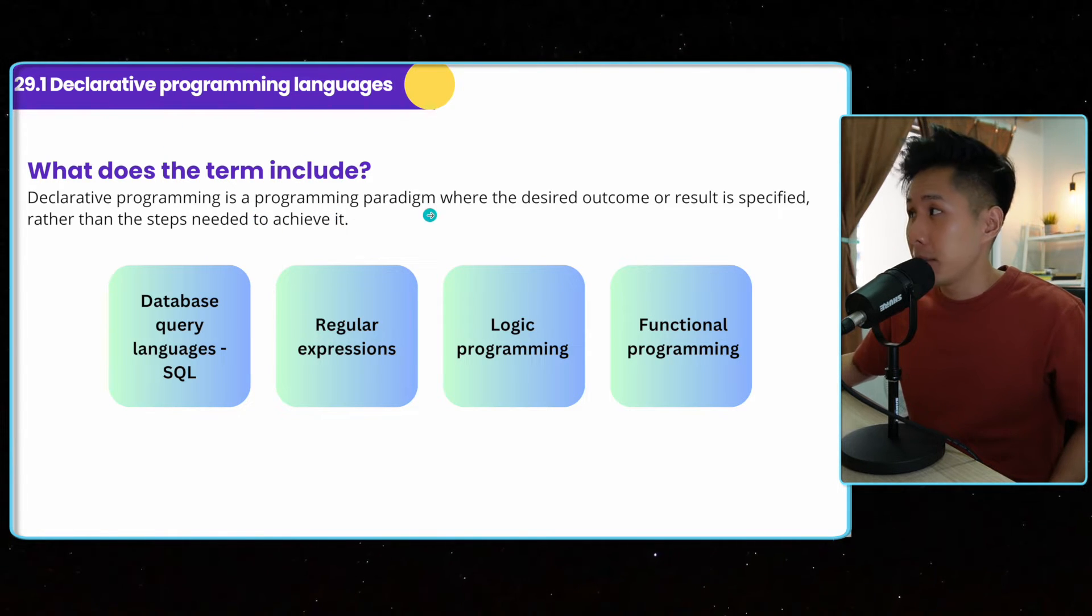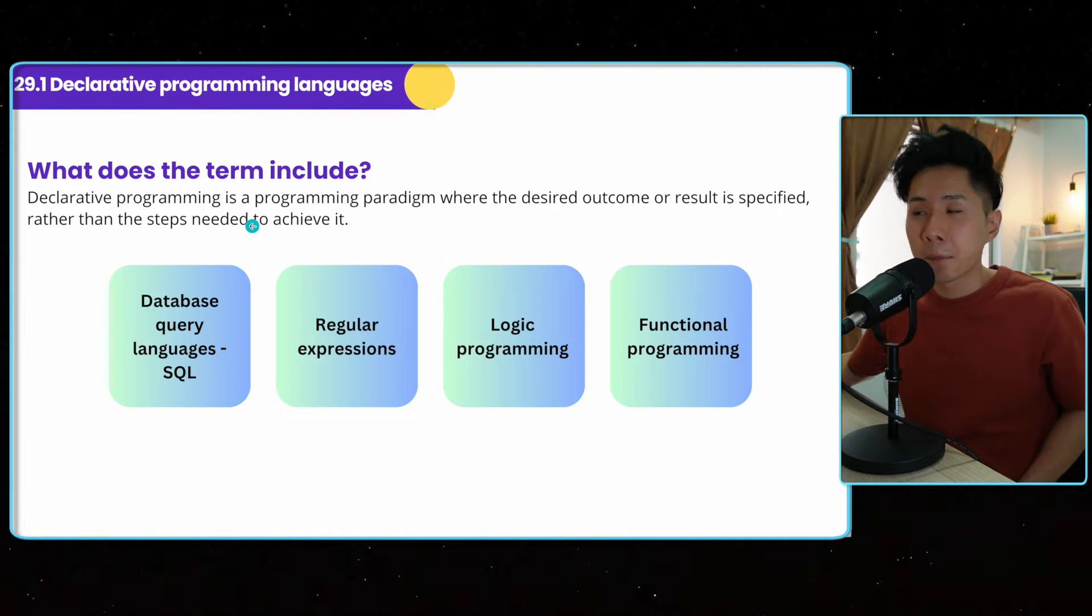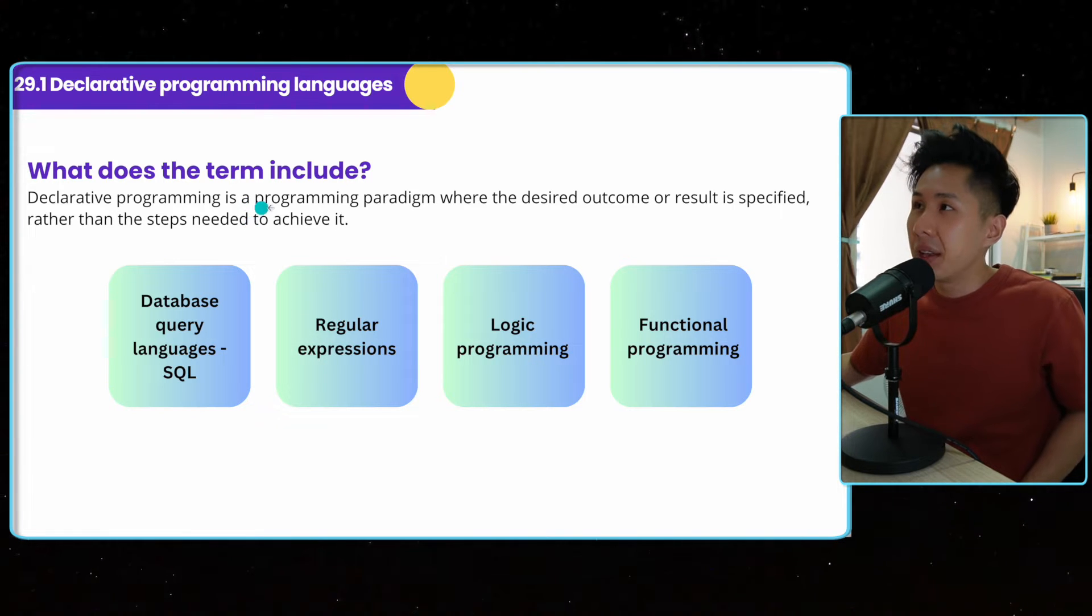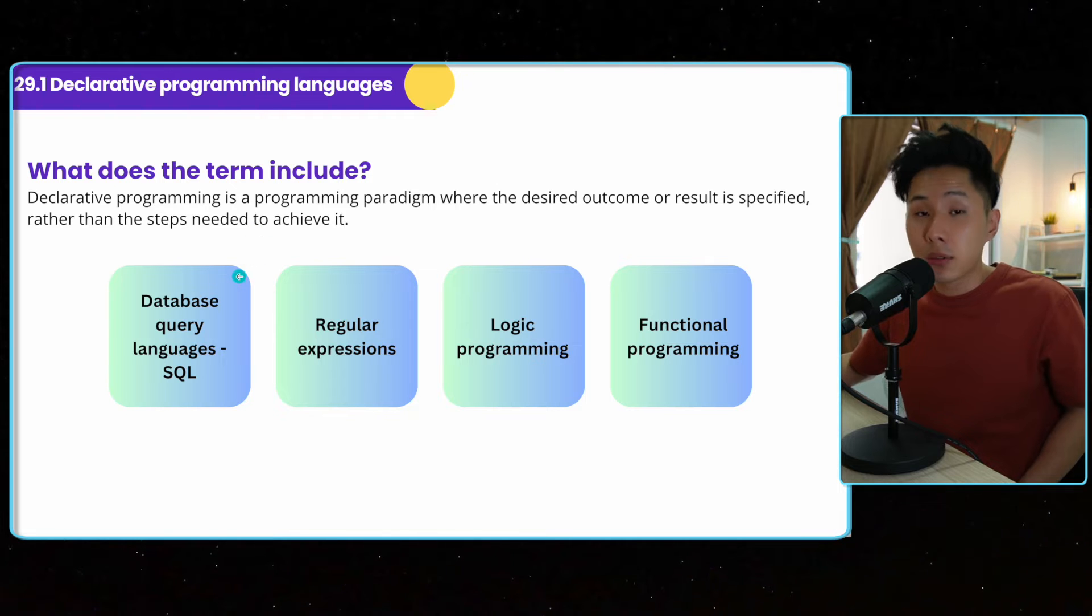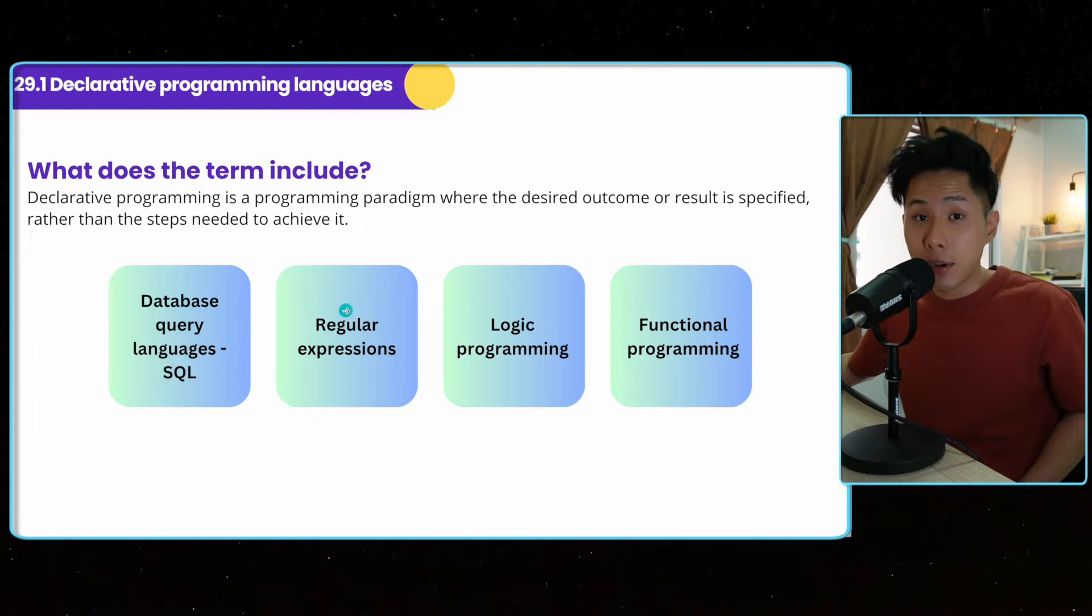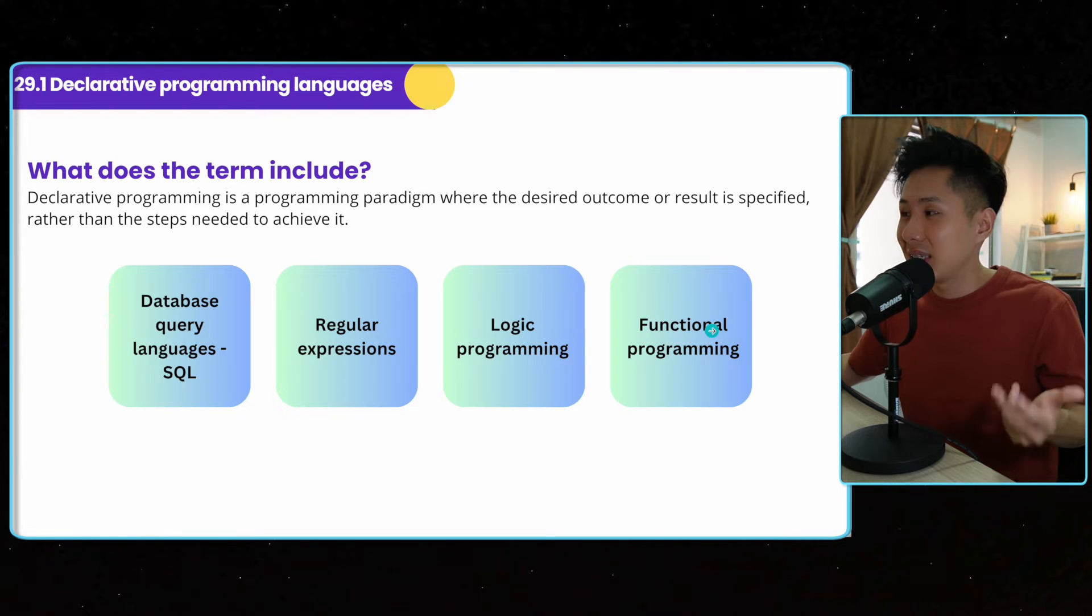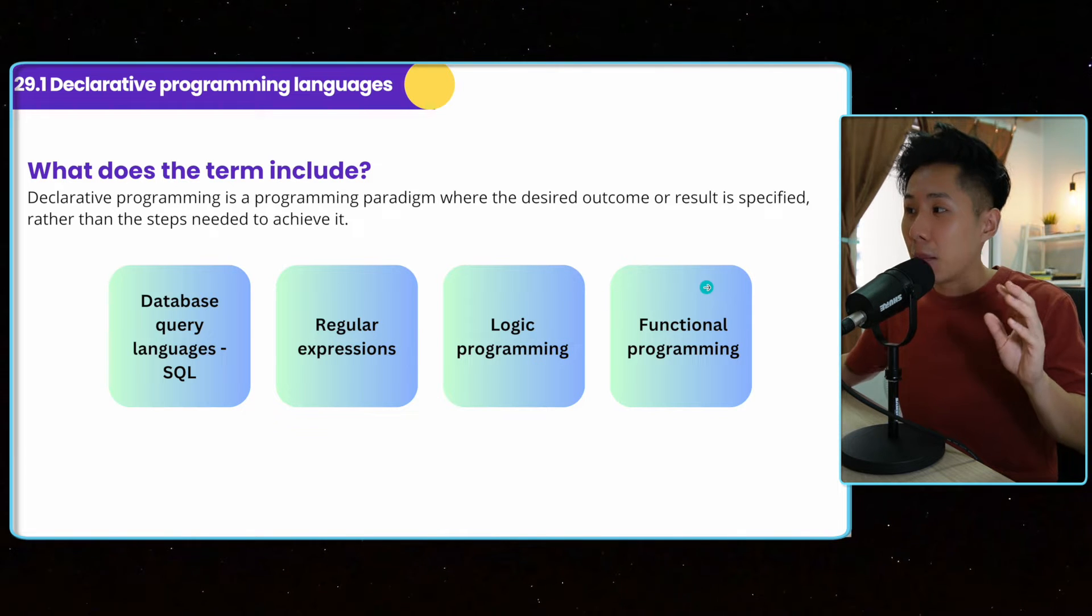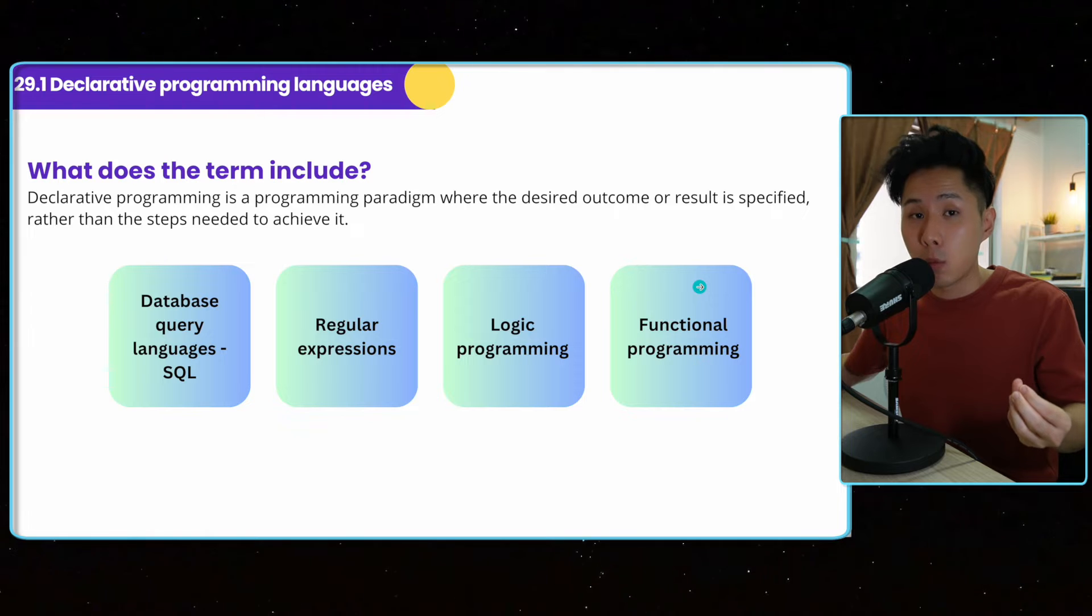It is a paradigm where the desired outcome or result is specified rather than the steps needed to achieve it. So in Python, all we have been writing about are the steps. But in declarative programming language, you will need to write down the problems that you want to solve, the logical statements, like SQL, regular expression, logic programming, functional programming. And how these programming languages work is beyond the scope of this syllabus. But hopefully Prolog can give you a sense of how declarative programming work.